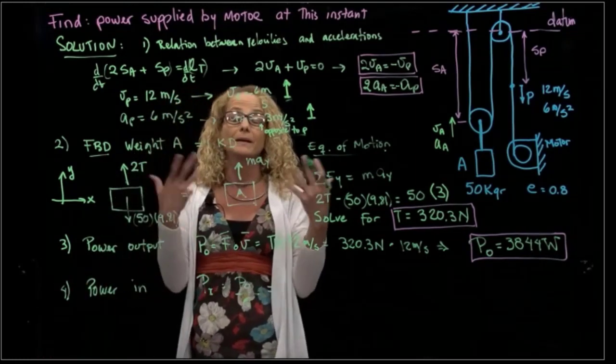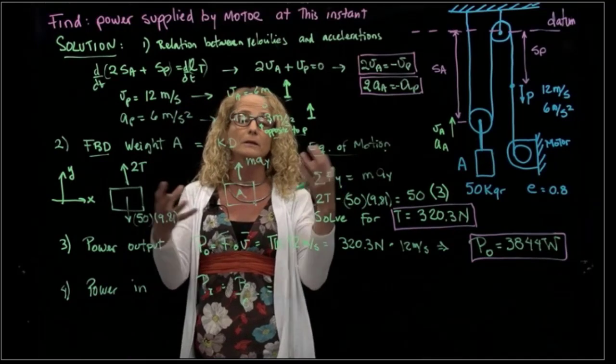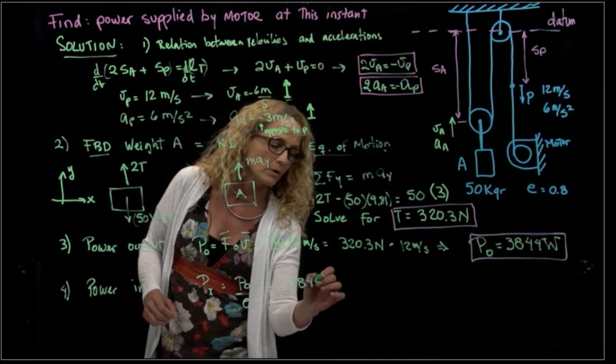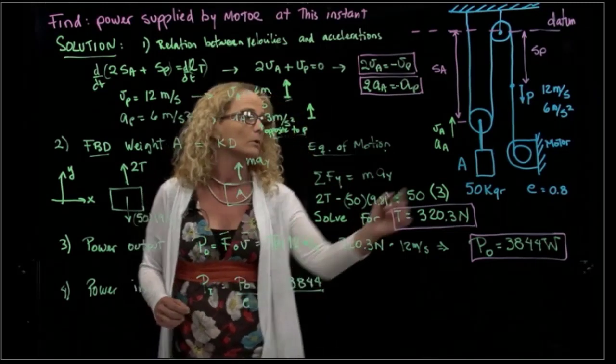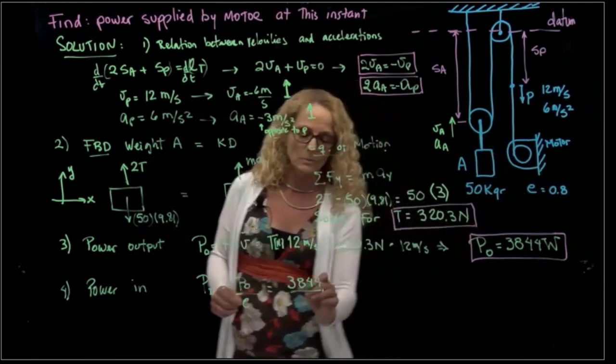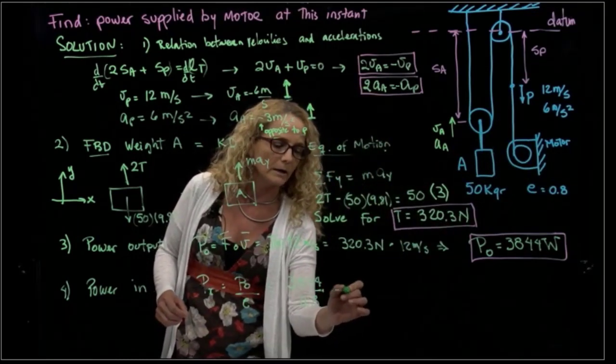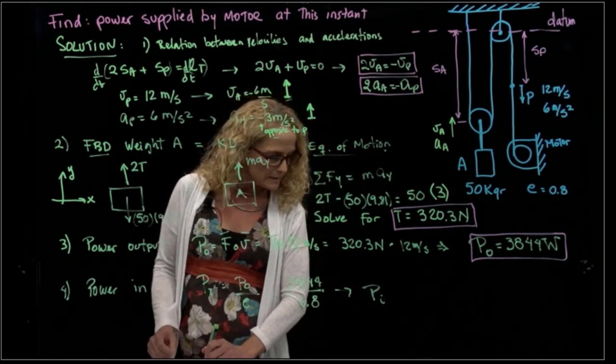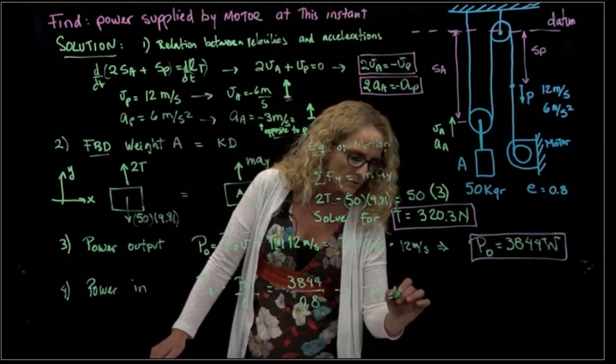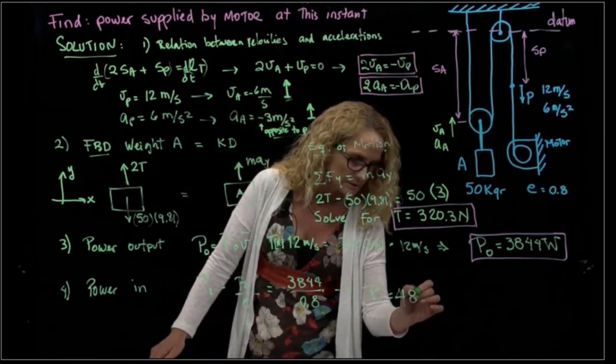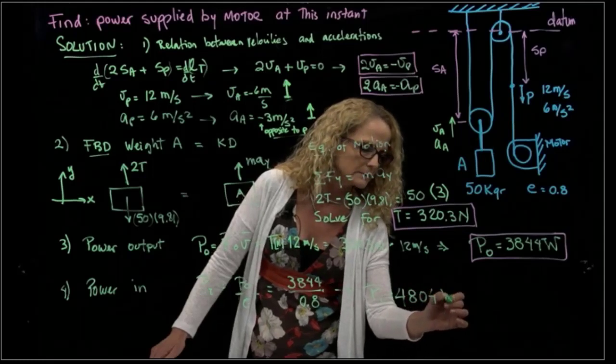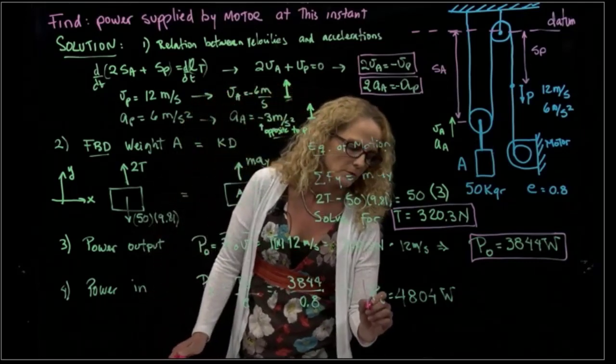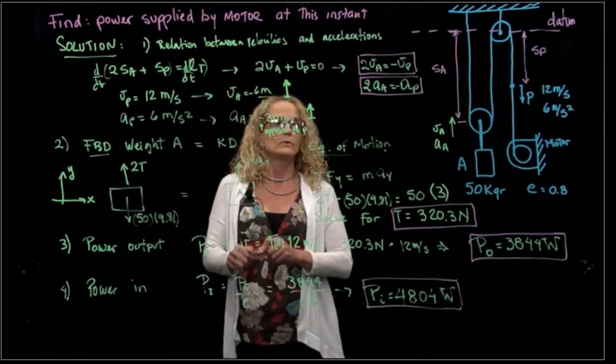And obviously this will give us a bigger value because there is some energy that is lost in the work that the motor is doing. So it's 3844 divided by the efficiency of the motor which is given, which is 0.8. So finally we have the power in of the motor equals 4804 watts. And that's the result that we were asked to find. Thank you.